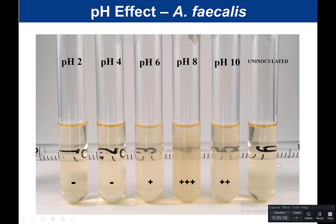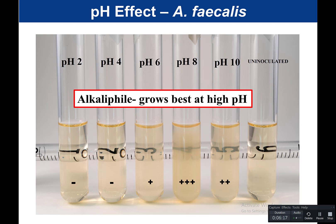Alkaligenes grew at a range of about pH 6 to pH 10, and optimally between 8 and 10. So we call this organism an alkalophile — it grows best at high pH. This makes sense because for Alkaligenes, its home is the intestine, where the pH is approximately 8. That's very different from the stomach, which is pH 2. Alkaligenes faecalis is found in the colon and therefore grows best at about pH 8.